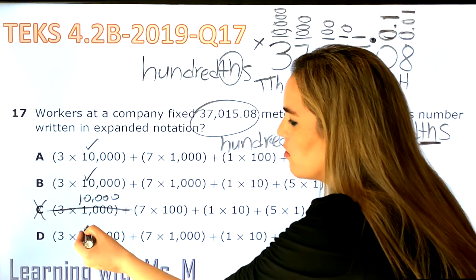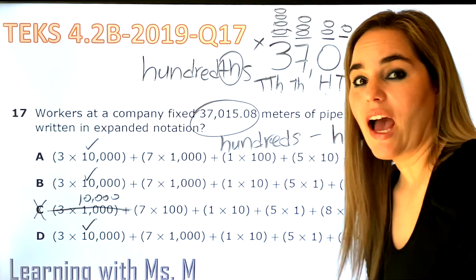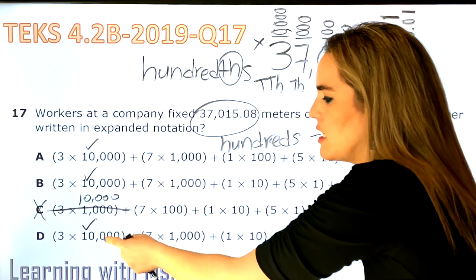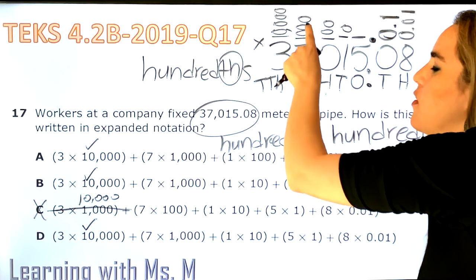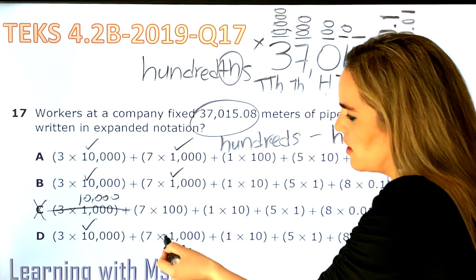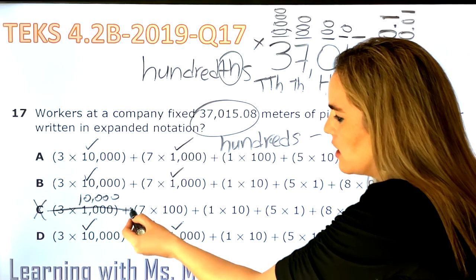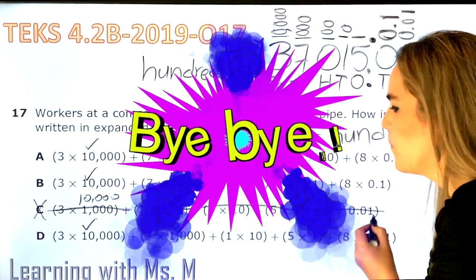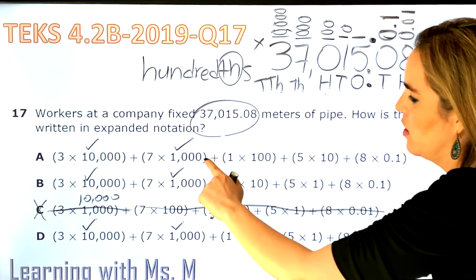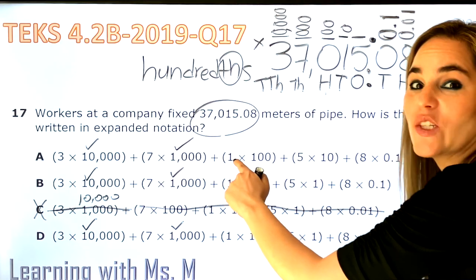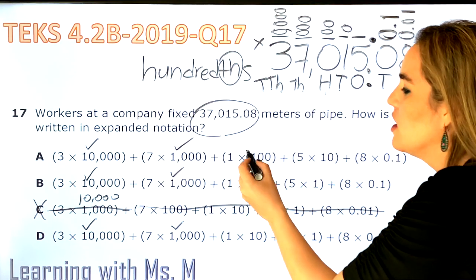Now let's see: 3 groups of 10,000? Yes. So now we're down to A, B, or D. Now the second part is 7 groups of 1,000. Yes, yes, and yes.